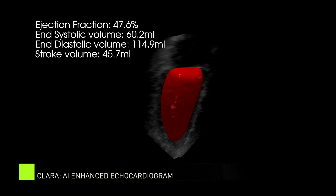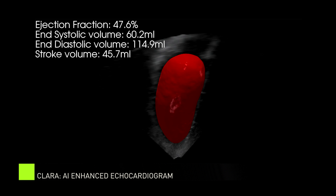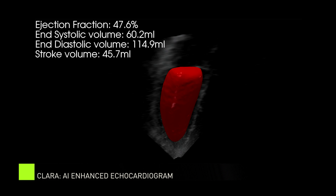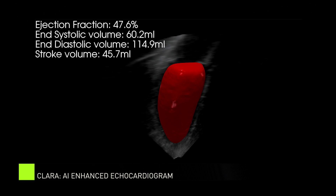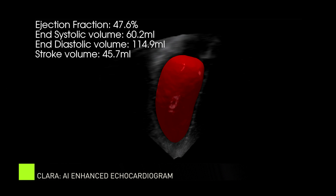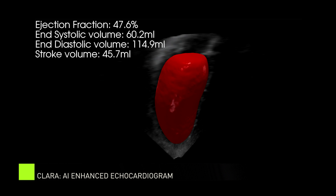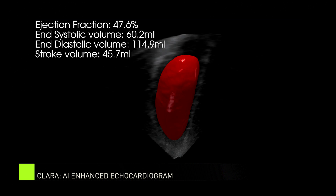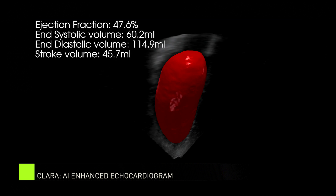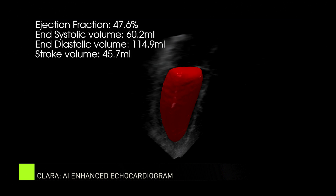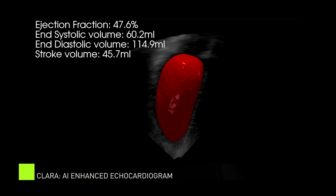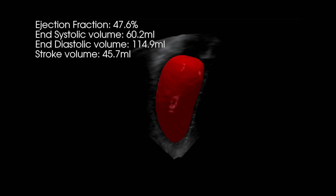Of course, the acoustic window needs to be of sufficient quality to allow the delineation of the entire left ventricular cavity endocardial border. As you can see, this visualization transforms echocardiography images from a grainy 2D picture into easily interpretable 3D images, adding literally another dimension that doctors can see when viewing echocardiograms and making interpretations more intuitive.